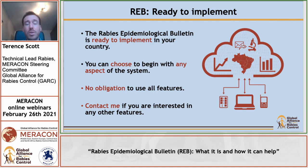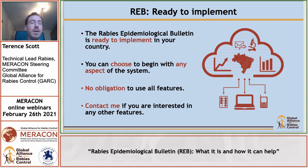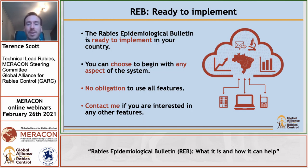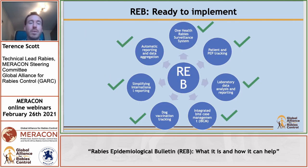There is no obligation to use all of the features. You can start at the local level or national level — for example, a small-scale intervention or community project — and then expand to the national level. If you're interested in any of these features, feel free to contact us at the Global Alliance for Rabies Control, and we can help provide a strong One Health surveillance system to address all your rabies surveillance needs.